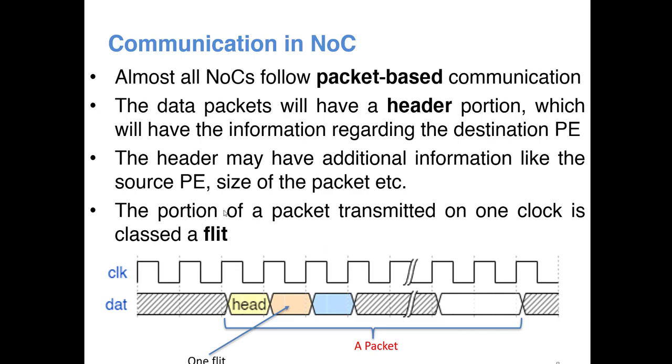Another term that we will hear is called a flit, or flow control digit. So this entire one constitutes a packet. But a part of a packet, the atomic unit of a packet that is sent on every clock edge, we call it as a flit. Your header is also a flit here. So one packet may be composed of one or more flits.